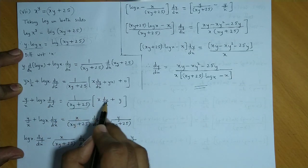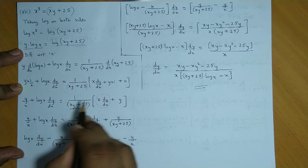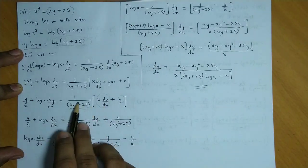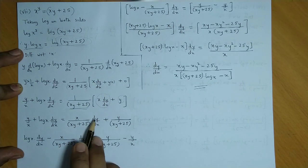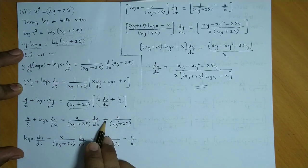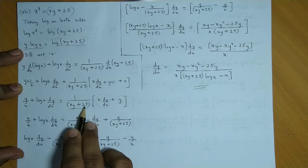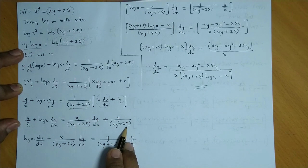Now open the brackets on the right hand side, left hand side as it is. So this term, first term will also multiply with this, and this term will also multiply with this. So if you open the brackets, you get x upon xy plus 25 times dy by dx, plus y upon this term, xy plus 25.